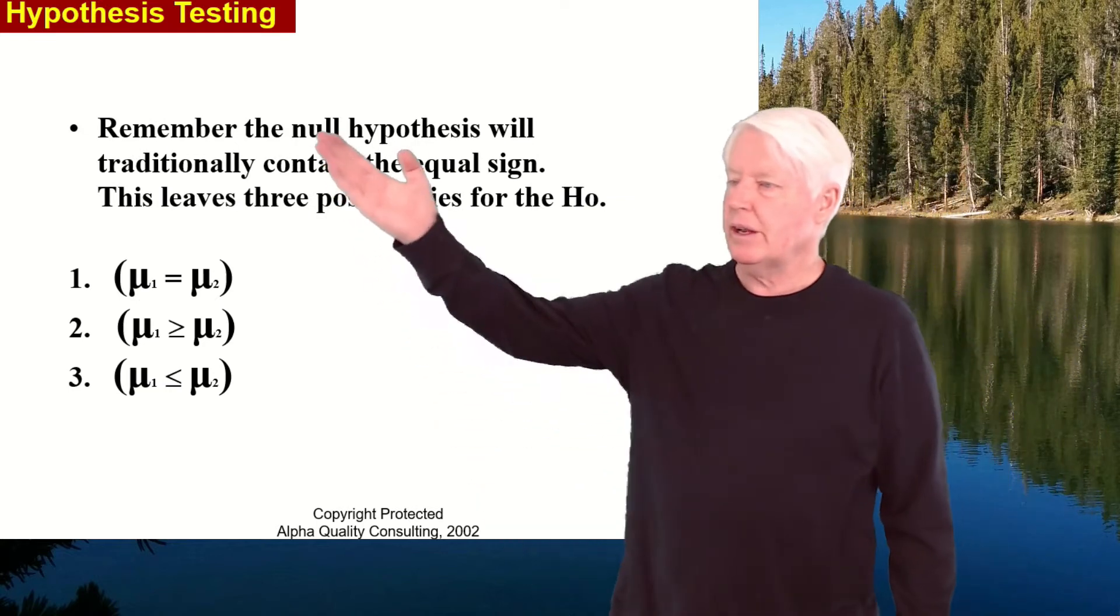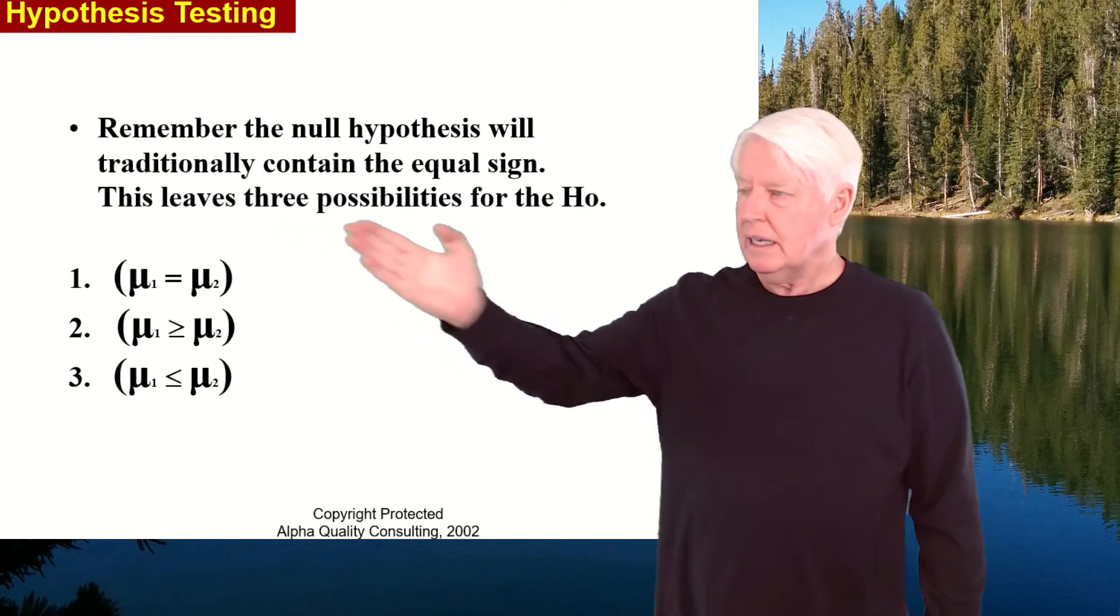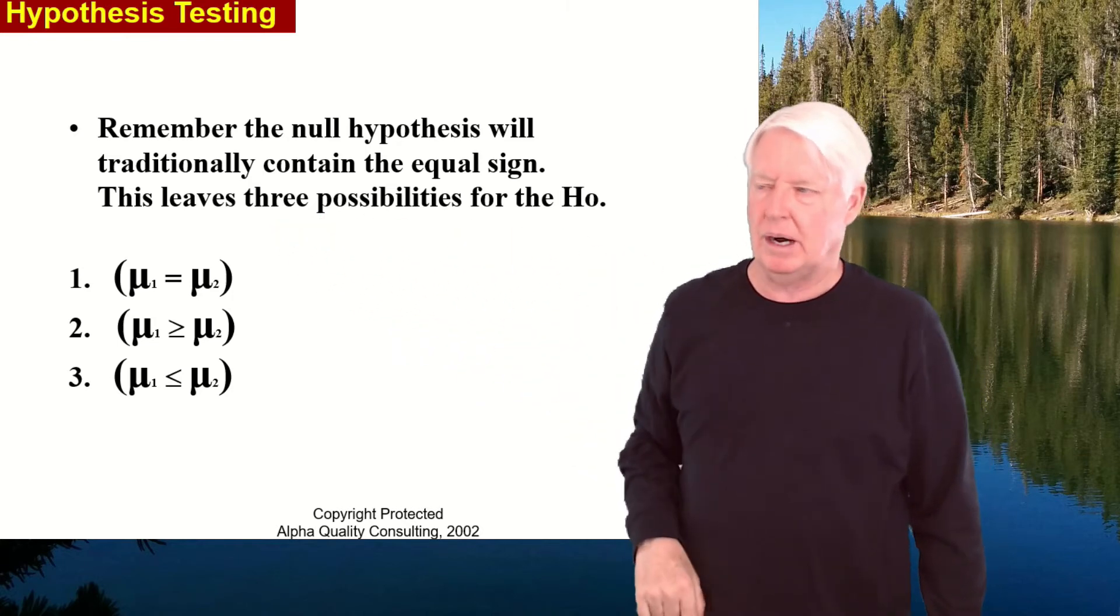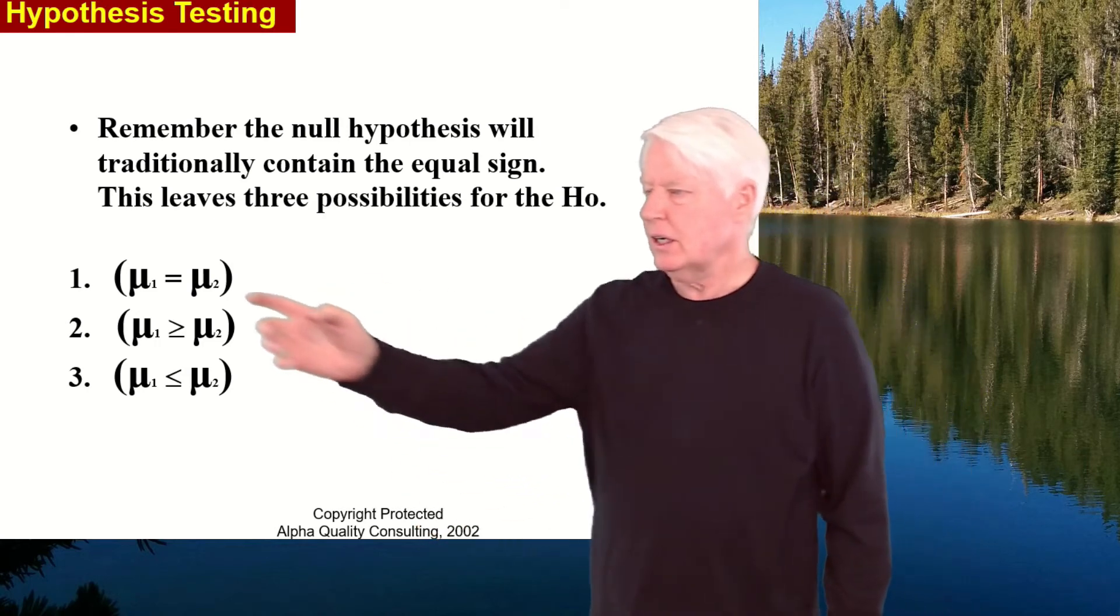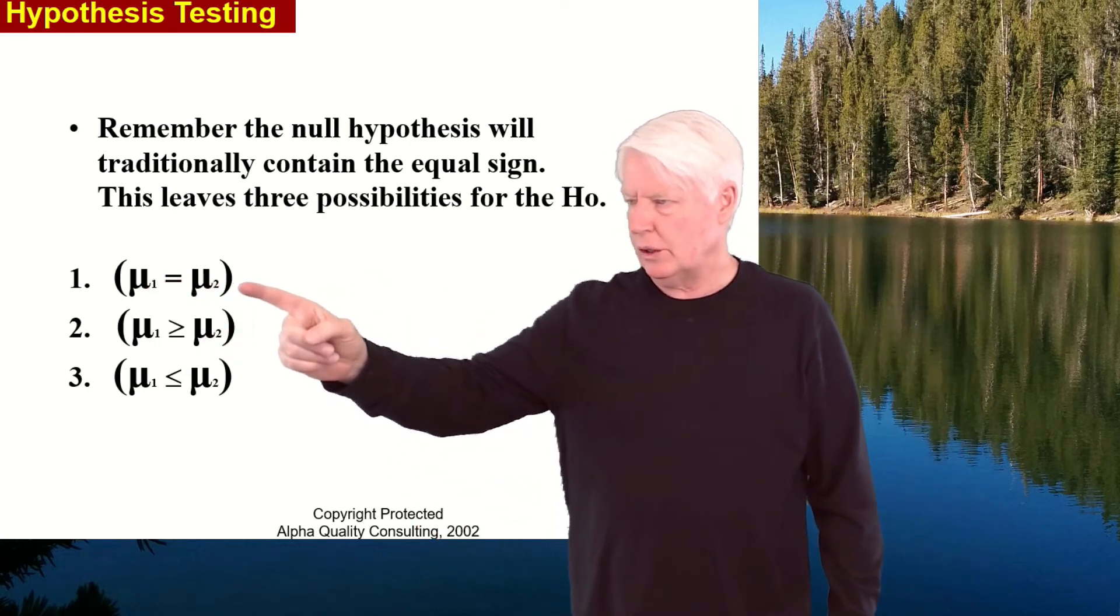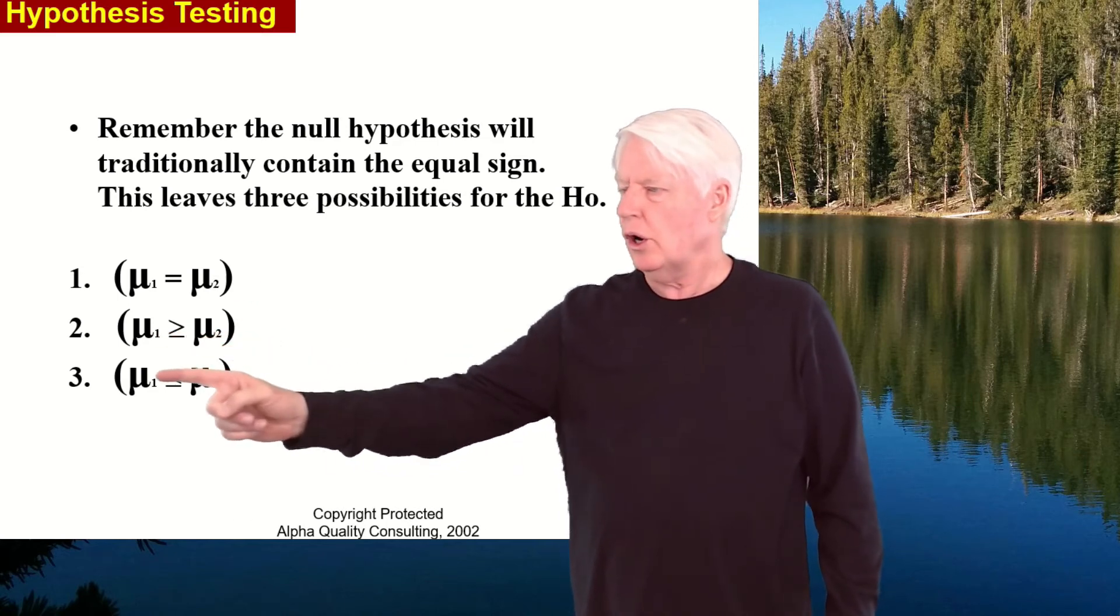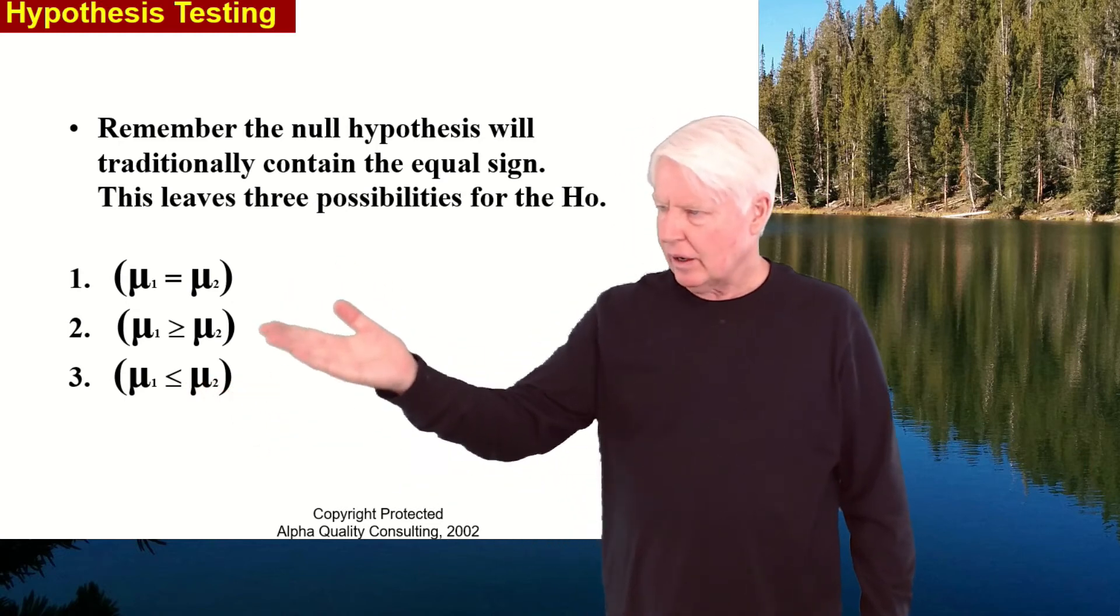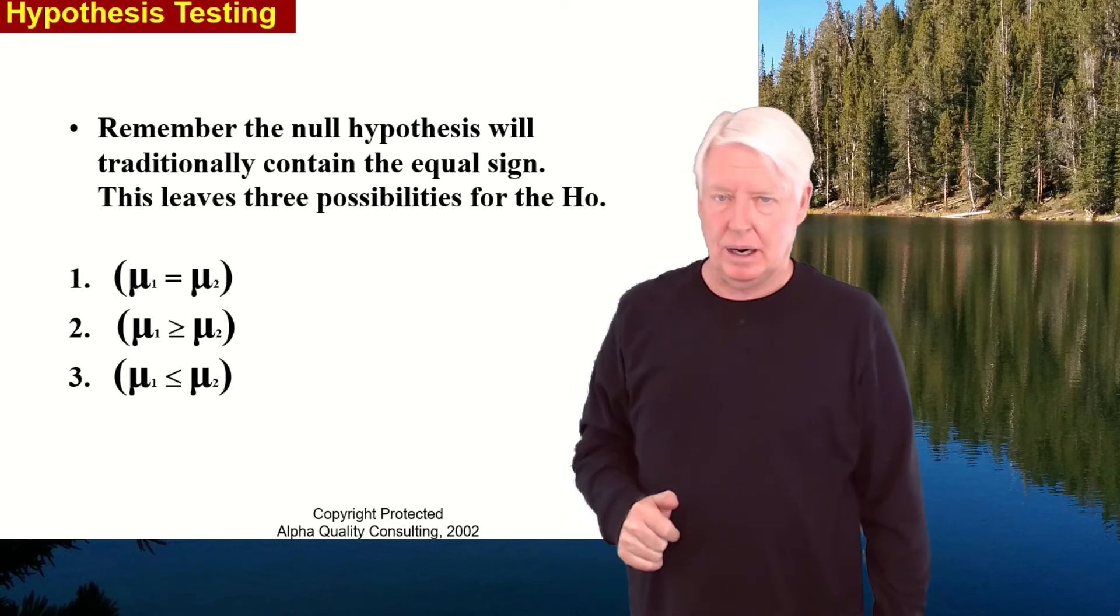Remember the null hypothesis will traditionally contain the equal sign. This leaves three possibilities for H naught or the null hypothesis: mu one equals mu two, or mu one is greater than or equal to mu two, or mu one is less than or equal to mu two. These are all the possibilities for null hypothesis.